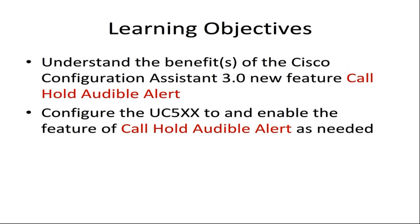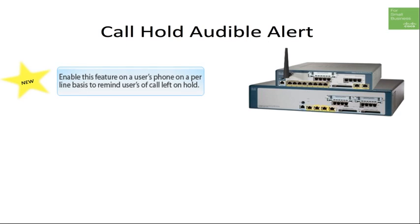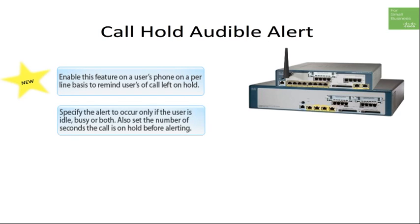Keep in mind that this feature is available on the Cisco Unified Communications 500 series when using the new Cisco Configuration Assistant 3.0. The Call Hold Audible Alert feature is used to remind users they have left a call on hold. This can save users from embarrassment, irate customers, and even lost revenue which could result from forgetting customers waiting on hold.